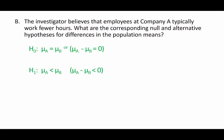So our null hypothesis is that the mean number of hours in Company A is the same as the mean number of hours in Company B. We can write this using our notation as μ_A equals μ_B, or we can say the difference is zero: μ_A minus μ_B equals zero.